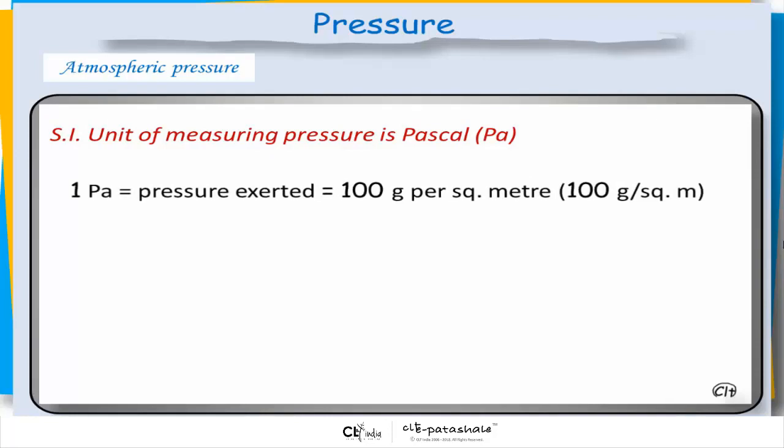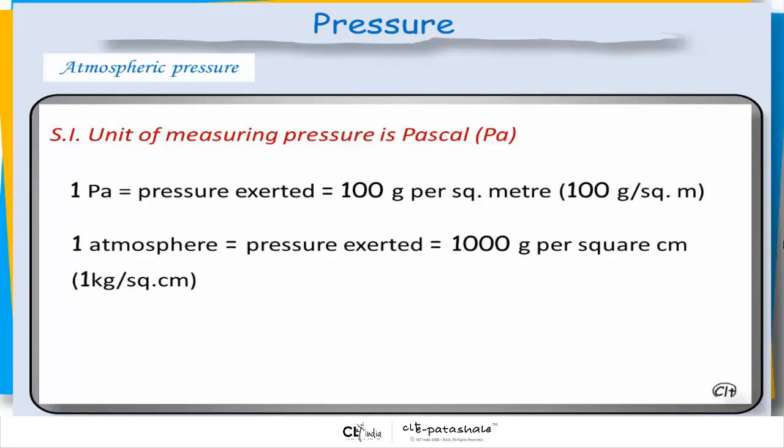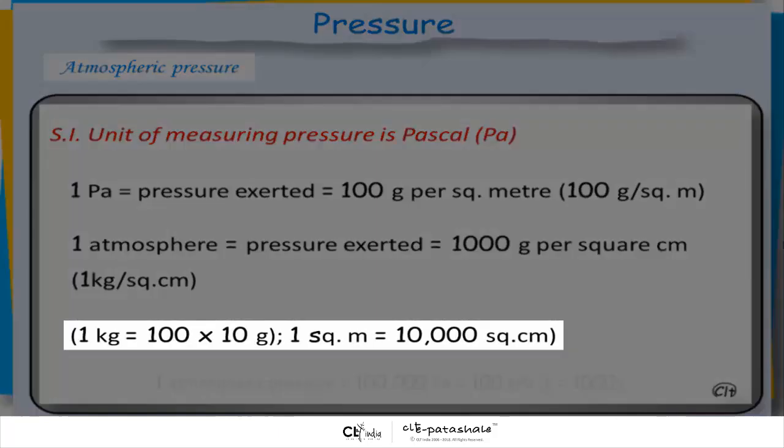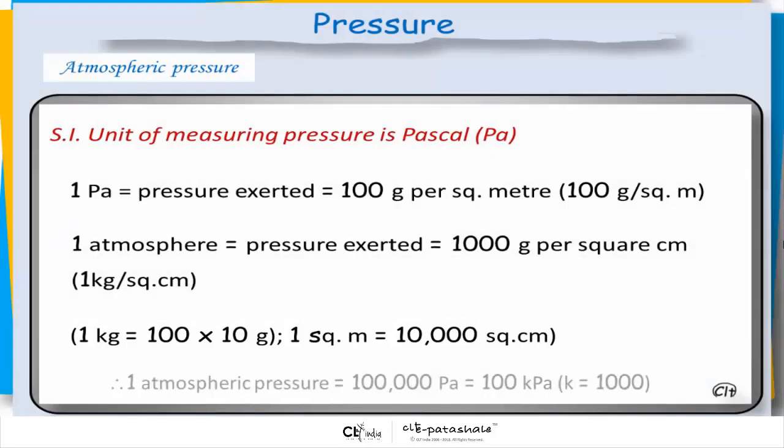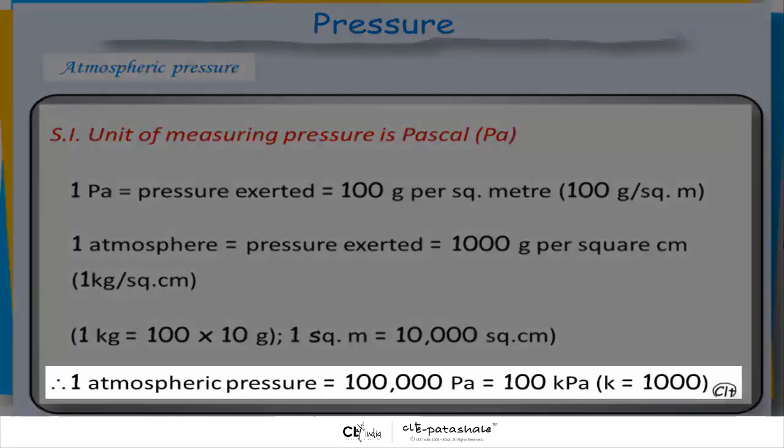1 Pa is pressure exerted equal to 100 gram per square meter. So, 1 kg is equal to 100 times 10 gram. Therefore, 1 square meter is equal to 10,000 square centimeter. So, we can say 1 atmospheric pressure which is equal to 100,000 Pa or 100 kilopascal.